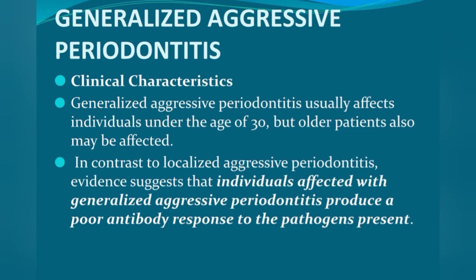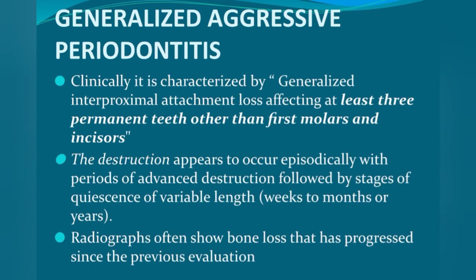Next, generalized aggressive periodontitis (GAP). The definition is different: it is characterized by generalized interproximal attachment loss affecting at least three permanent teeth other than first molars and incisors. So in the case of GAP, interproximal attachment loss affects at least three permanent teeth other than first molars and incisors.